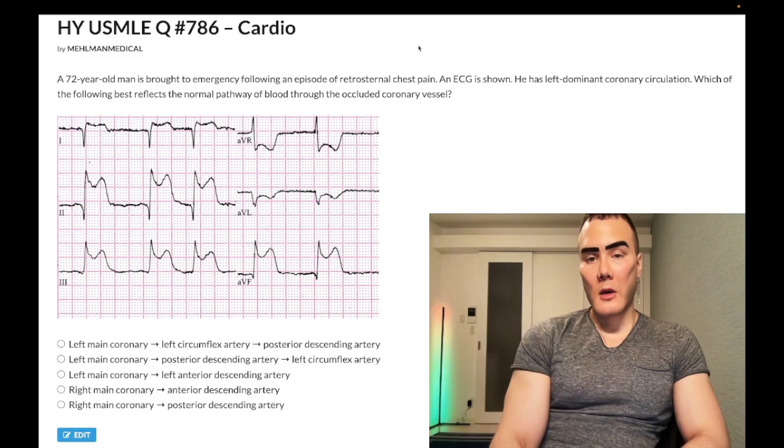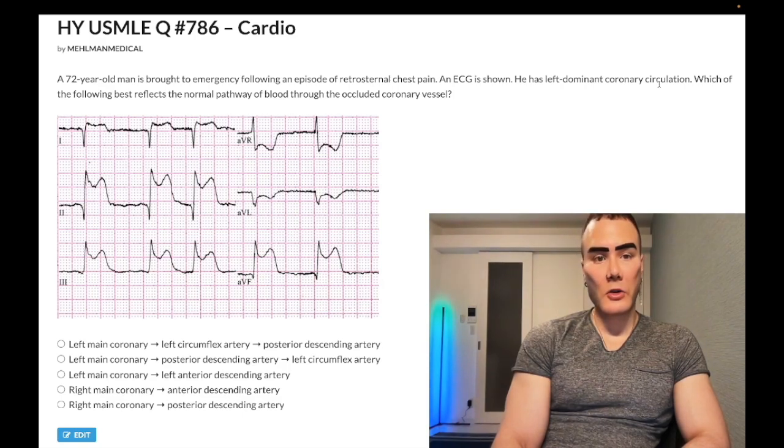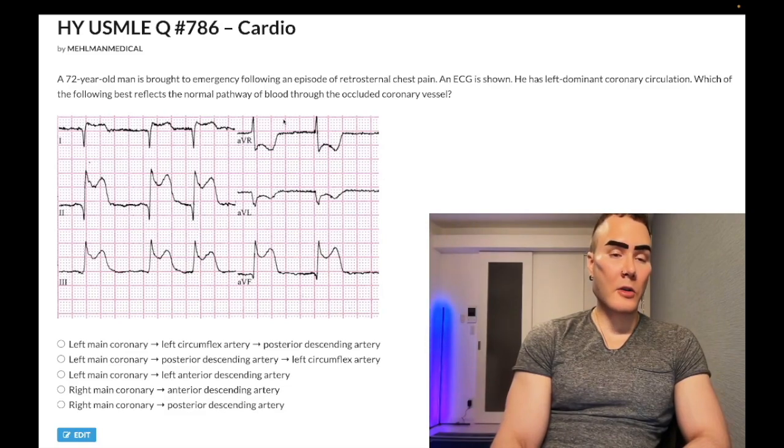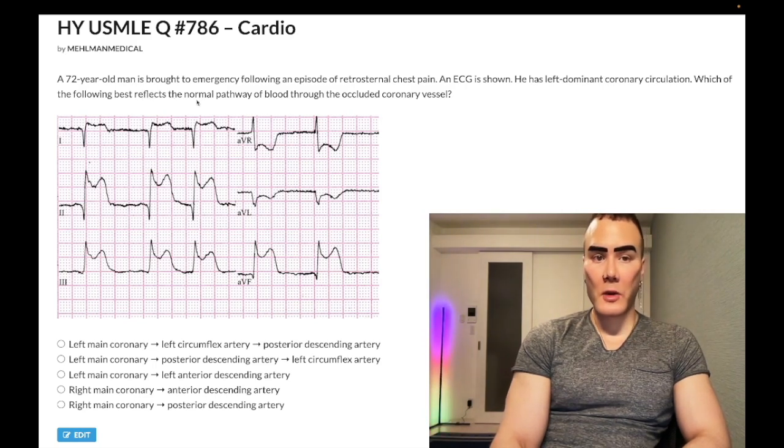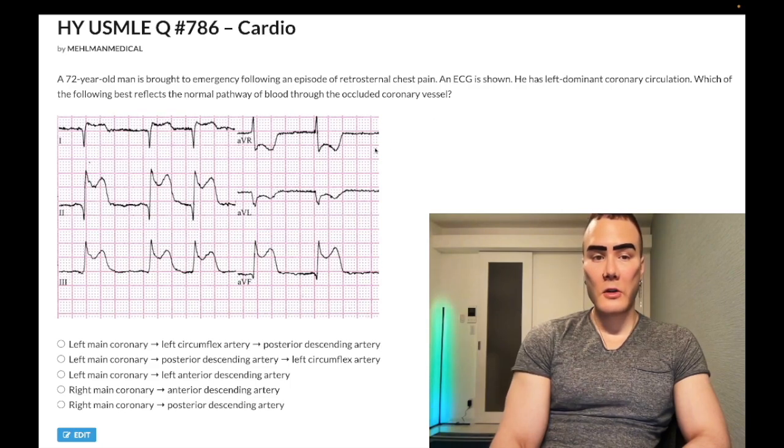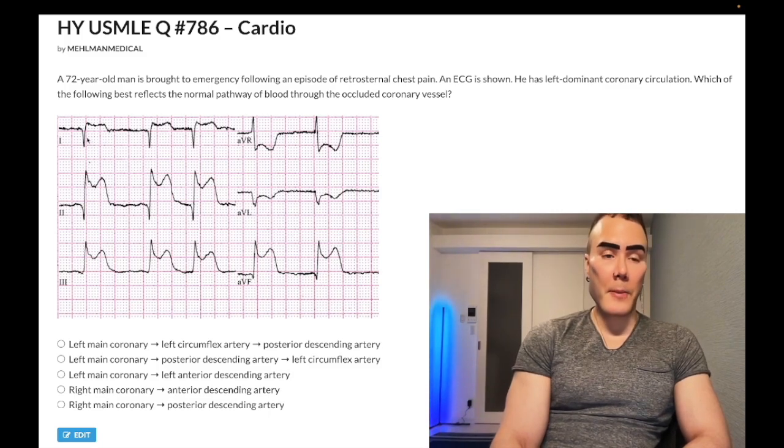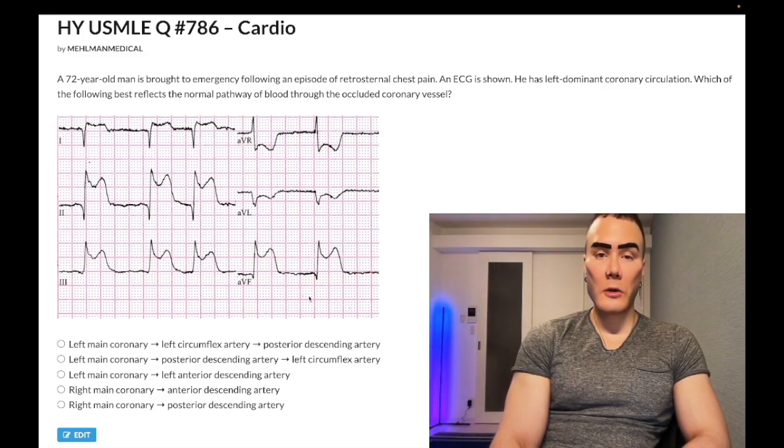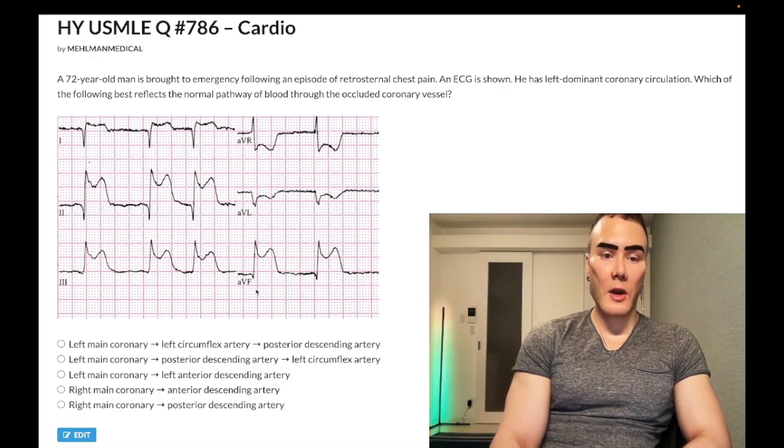72 year old man. He has an MI and we see here that he has left dominant coronary circulation. Obviously I'll discuss the meaning of that in a moment. And then the question is asking, which of the following best reflects the normal pathway of blood through the occluded coronary vessel. So let's look at the MI, at the ECG here with this MI. I Googled inferior infarct and ECG, and we obviously have ST elevations in leads two, three, and AVF.